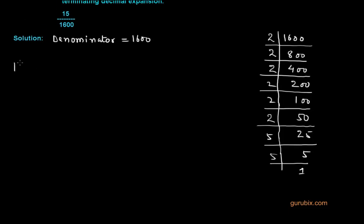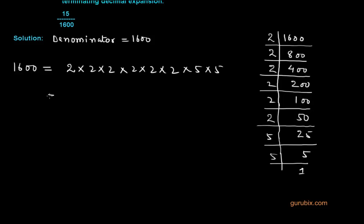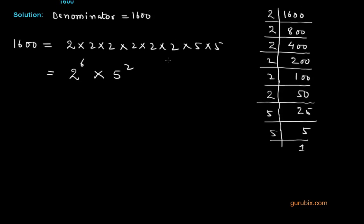Now we shall write 1600 as a product of its prime factors: 2 × 2 × 2 × 2 × 2 × 2 × 5 × 5, that is 2 multiplied 6 times and 5 multiplied 2 times. We can write this as 2 raised to the power 6 multiplied by 5 raised to the power 2.